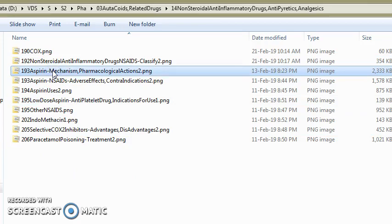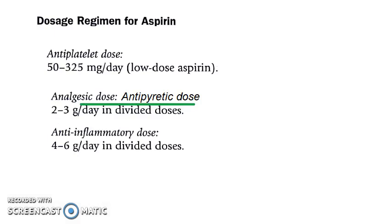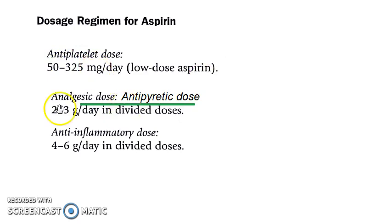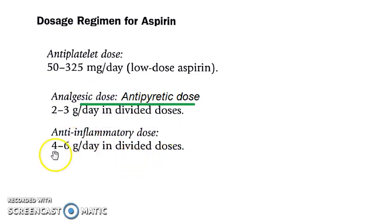Aspirin is the prototype drug for NSAIDs. At a very low dose — around 50 milligrams per day — aspirin works as an antiplatelet drug. If given at 2 to 3 grams per day in divided doses, it works as an analgesic and antipyretic, reducing pain and fever. For an anti-inflammatory effect, the dose must be 4 to 6 grams per day.